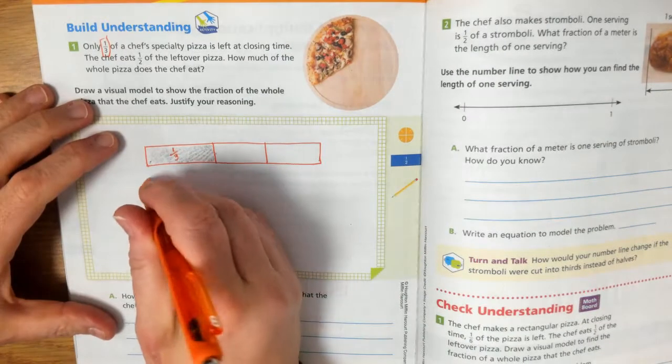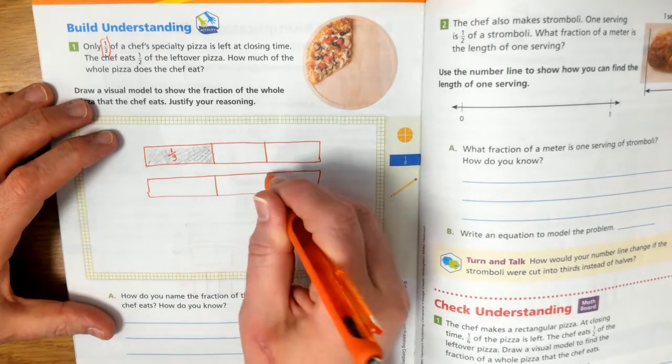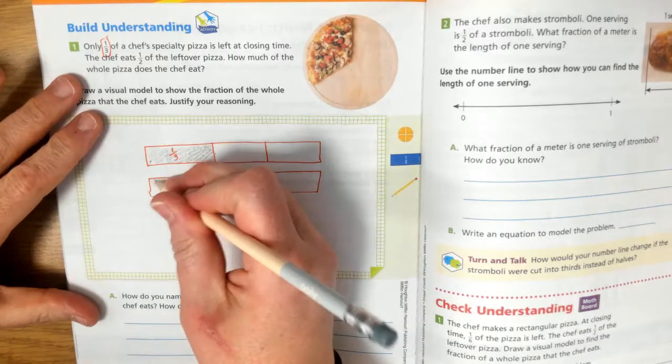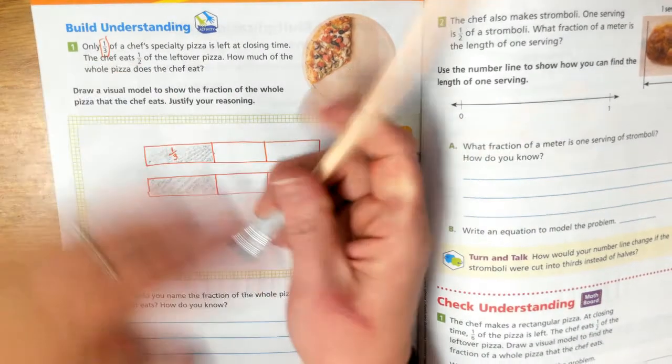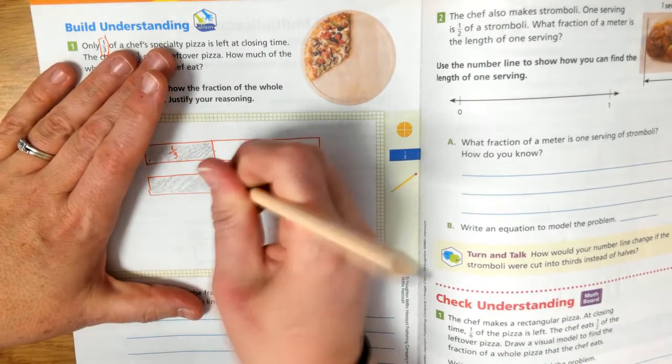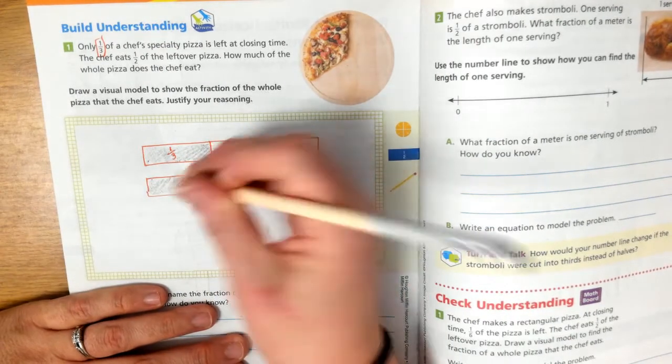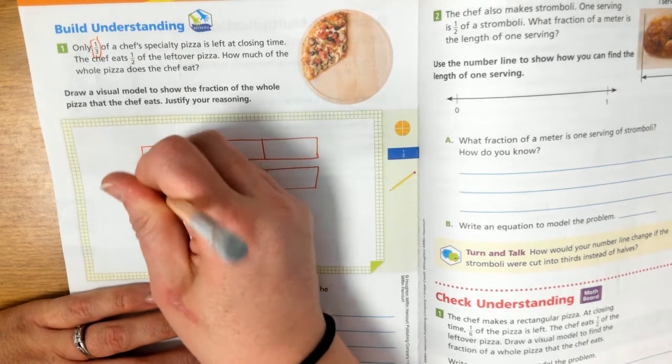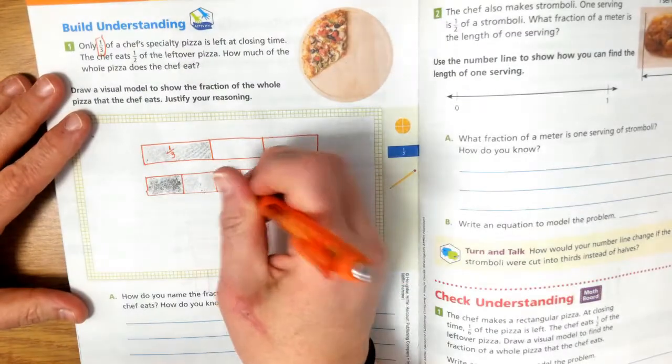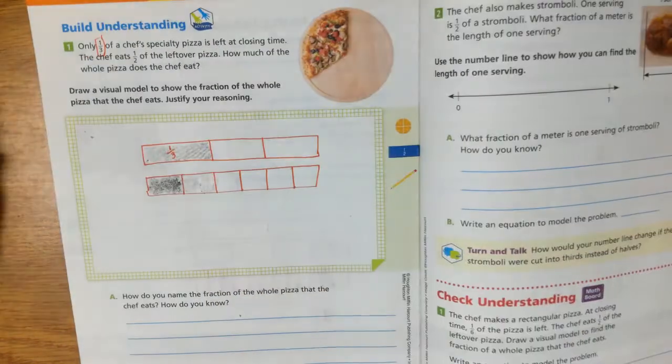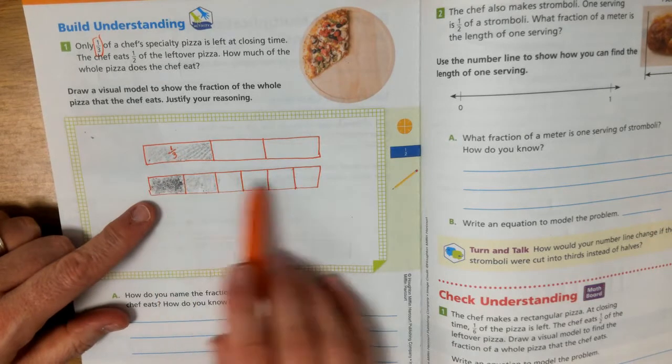The chef eats half of the one-third. So here's our chef's pizza again. But the chef eats... that's how much was left. But I need to know how much the chef ate. Sorry about that. I shouldn't have shaded that whole part. Well, actually, here's what I'll do. I'll do the part that the chef eats darker. So the chef eats half of the one-third. So I'm going to take all my thirds and break them up into half.